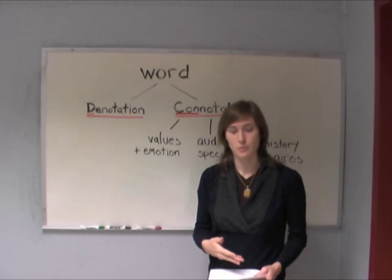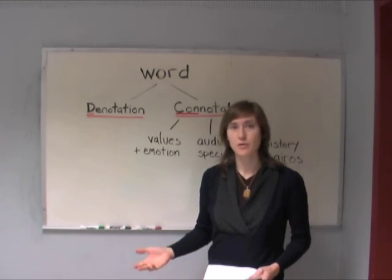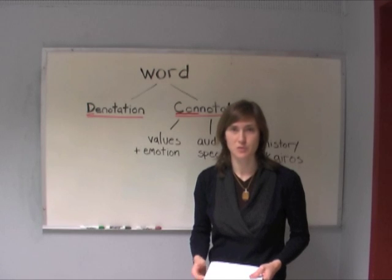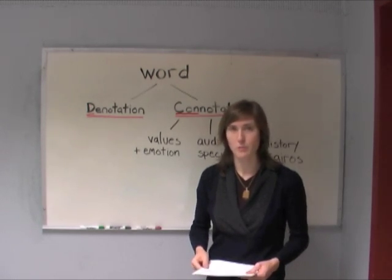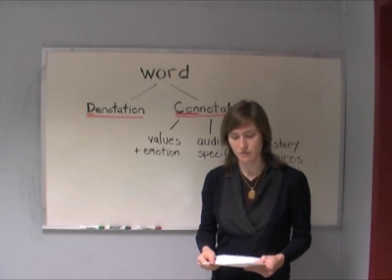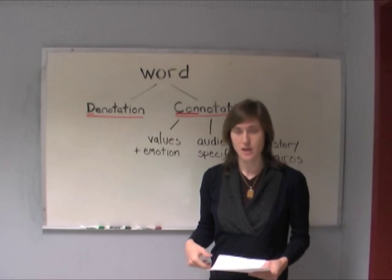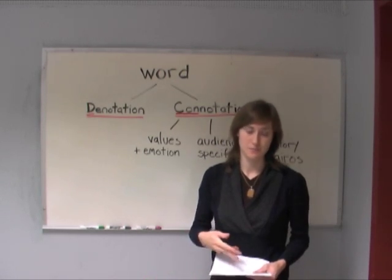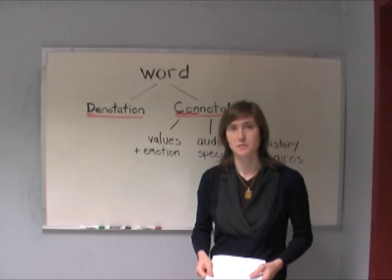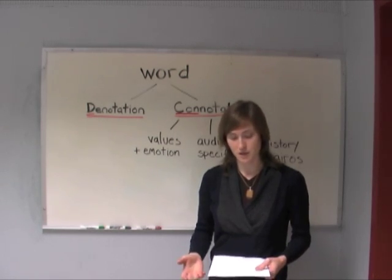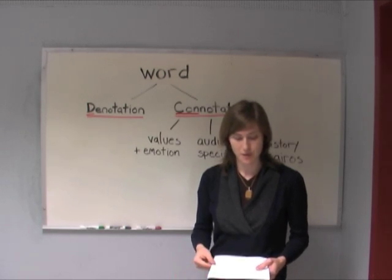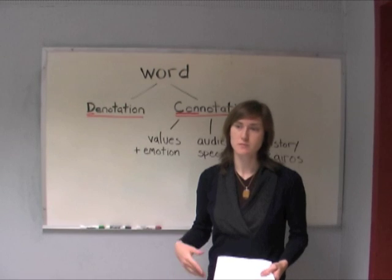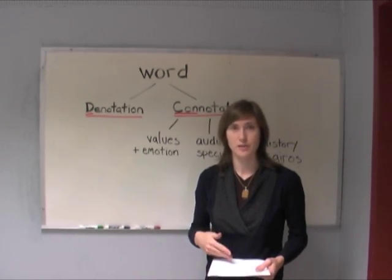Take the words 'house' and 'home.' Both might be listed as synonyms in a thesaurus because they both mean a place where humans live and sleep. But 'home' has connotations of warmth, family, and safety — connotations that 'house' does not have. Another example: the words 'minor' and 'child.' They might both be listed as synonyms and both mean a person under the age of legal maturity, but 'child' has connotations of innocence, immaturity, and vulnerability — connotations that 'minor' does not have.